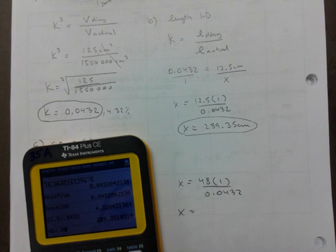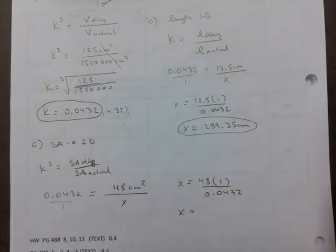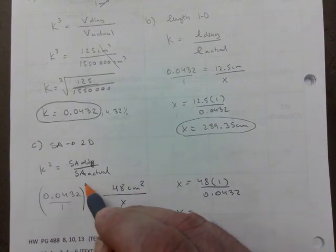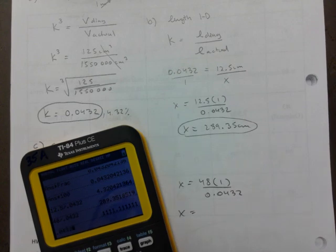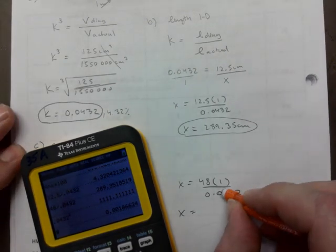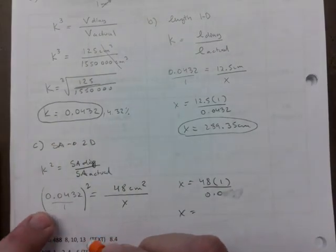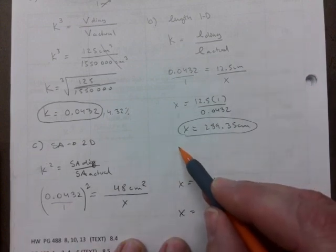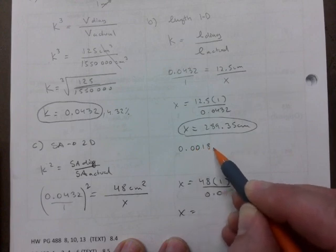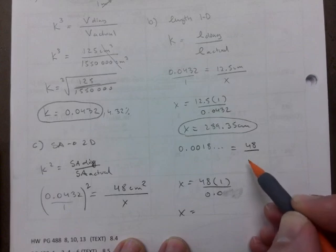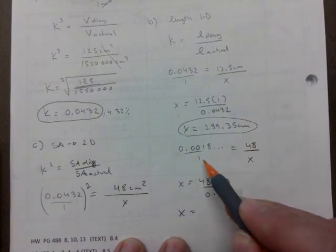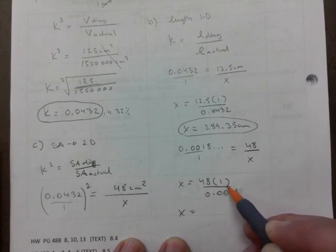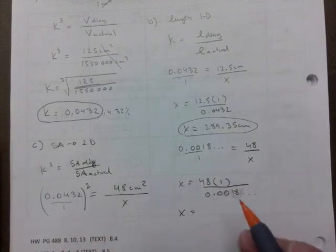I just fell for it - I need to square that. Let's adjust that. When we square that, I should probably do another line here. I'm going to go 0.0018 and that keeps going equals 48 over x. You put a one there, it's 48 times 1 divided by 0.0018.